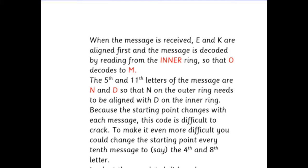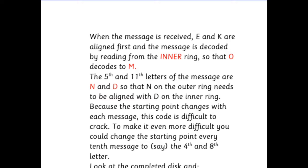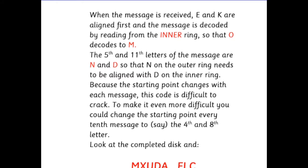When the message is received E and K are aligned first and the message is decoded by reading from the inner ring so that O decodes to M. The fifth and eleventh letters of the message are N and D so that N on the outer ring needs to be aligned with D on the inner ring. Because the starting point changes with each message this code is difficult to crack. To make it even more difficult you could change the starting point say every tenth time to maybe the fourth and eighth letter.